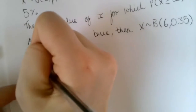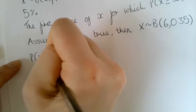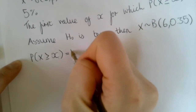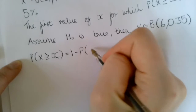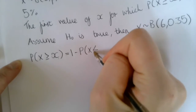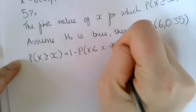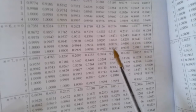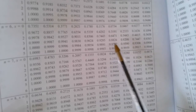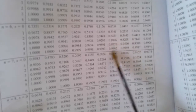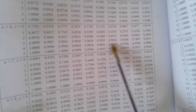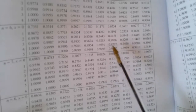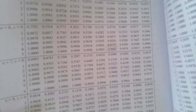We need to remember that the probability that x is greater than or equal to little x equals 1 minus the probability that x is less than or equal to x minus 1. We're going to trial a couple of values to see if we get a probability less than 0.05, starting with the ones towards the end of the list, because they are our greatest values. When we do 1 subtract these values, we should get a small probability.